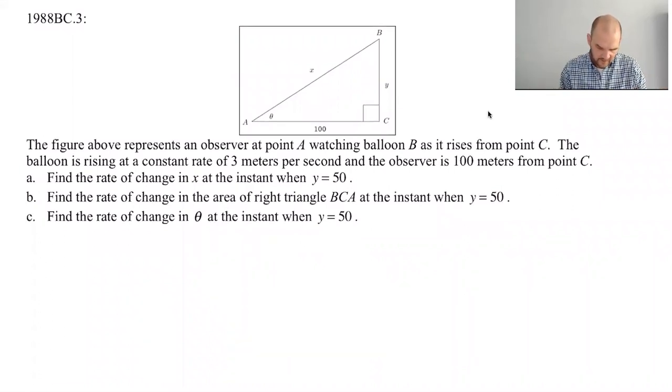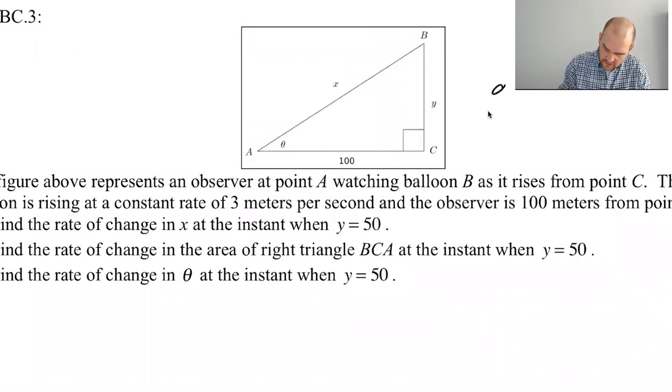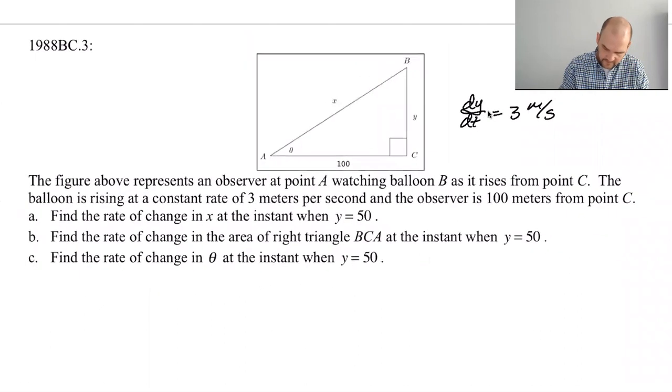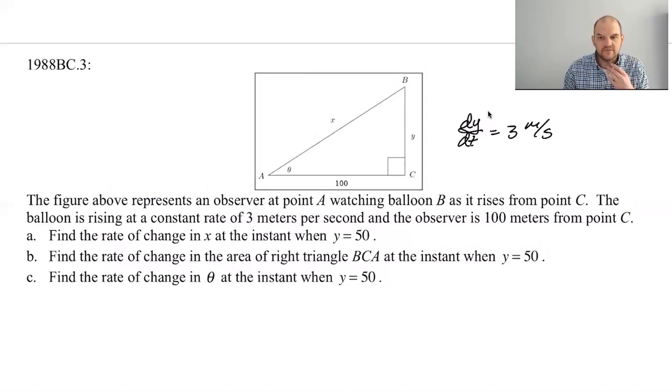So the figure above represents an observer at a point A. A more modern version of this problem, for whatever reason, tends to involve a rocket launch or launching a satellite or something, but whatever. This person just watching a balloon rise from point C. So the balloon starts here and it goes up.